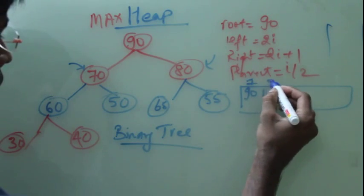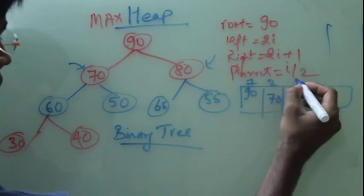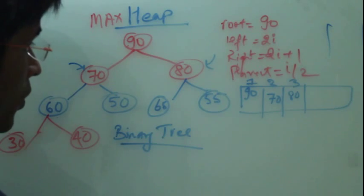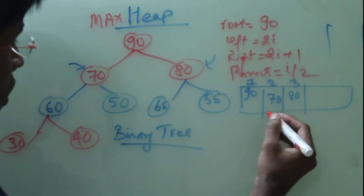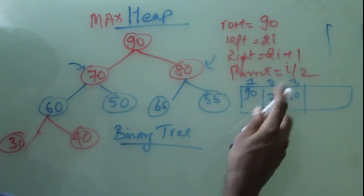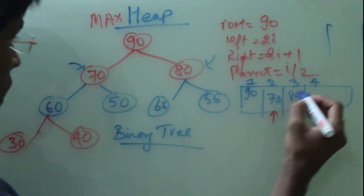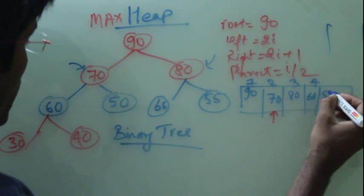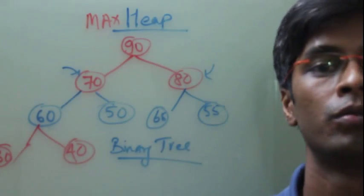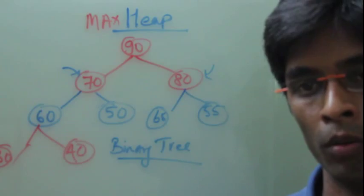The second element, 2 into 1, will be 70. The third element, 2 into 1 plus 1, is 80. Now I have traversed both left side and right side, then I will move to 70. So 2 into 2 is 4. So 60. Then 50. So if you want to represent this MAX HEAP in the array, we know this is a binary tree, so it has to follow the binary tree property.